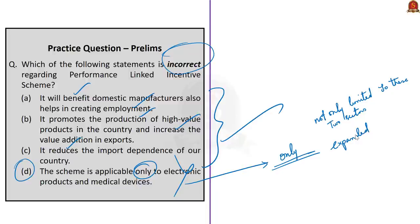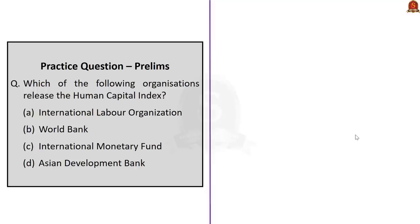The final prelims question asks us to identify the organization that releases the Human Capital Index. The options are International Labour Organization, World Bank, International Monetary Fund and Asian Development Bank. The Human Capital Index is prepared by the World Bank, which measures countries' ability to mobilize the economic and professional potential of their citizens. The right answer is option B — World Bank.